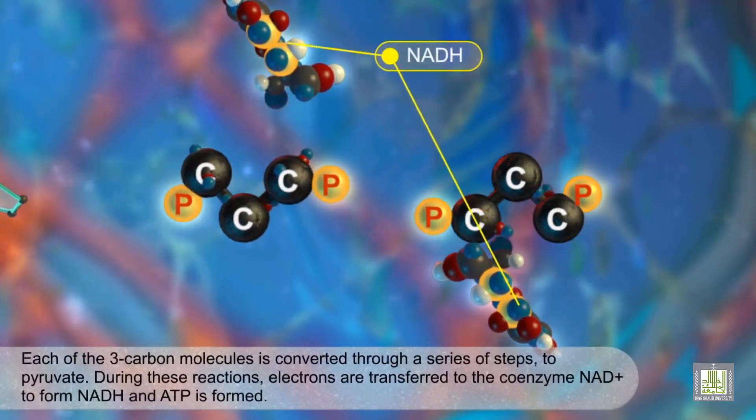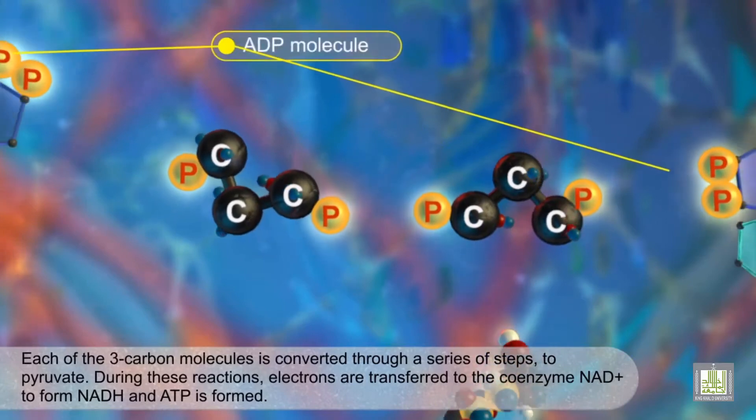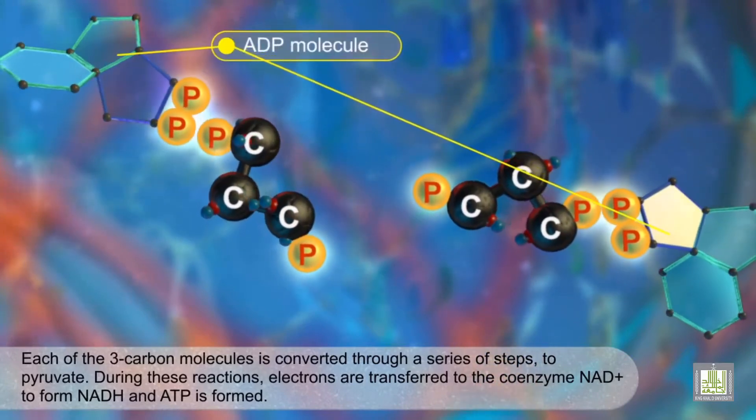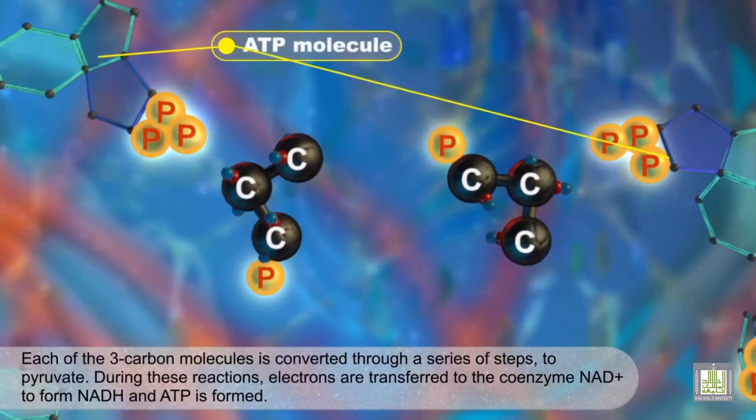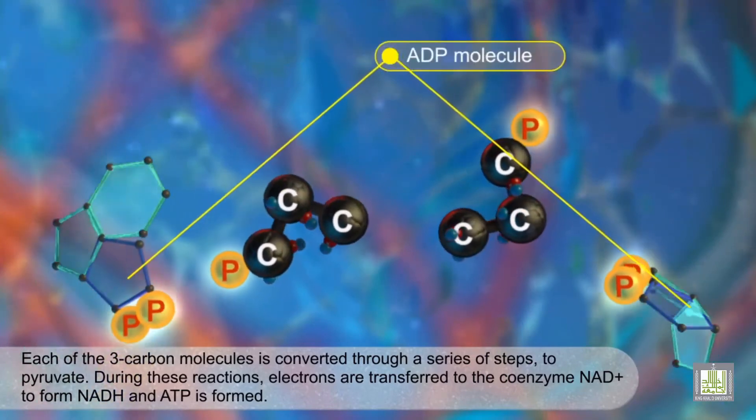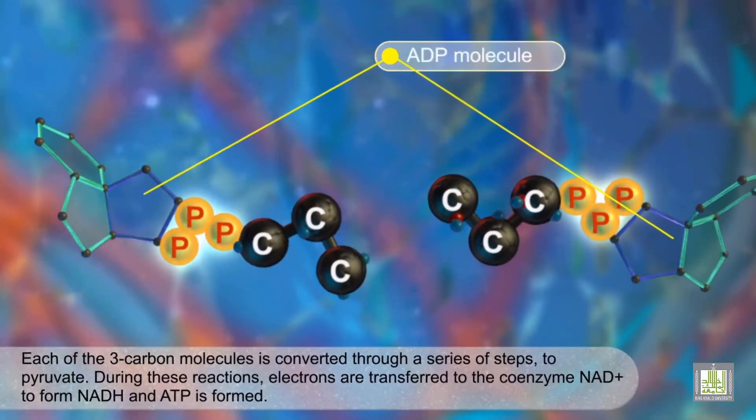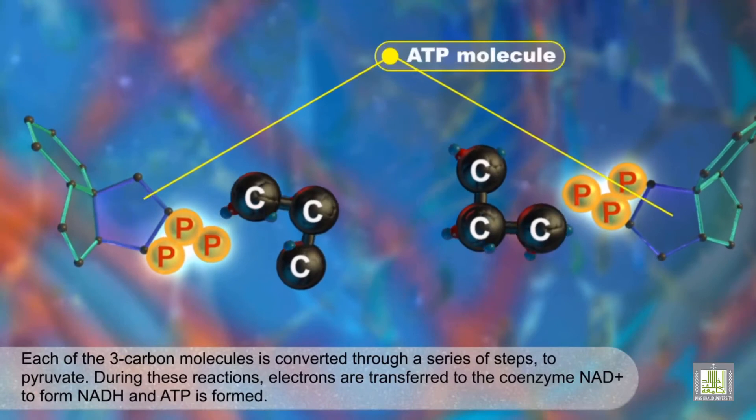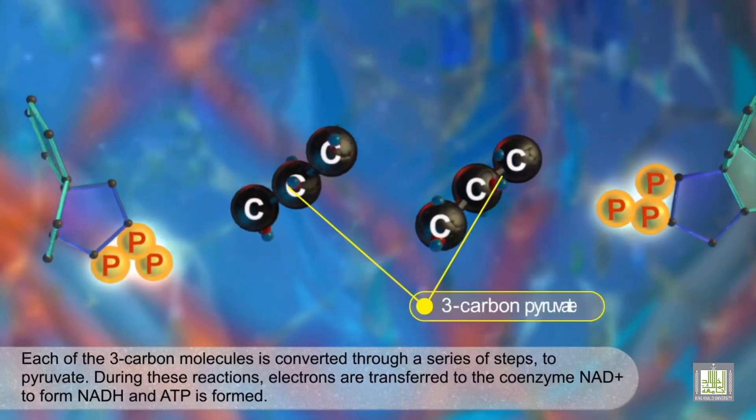Each of the three-carbon molecules is converted through a series of steps to pyruvate. During these reactions, electrons are transferred to the coenzyme NAD+ to form NADH, and ATP is formed.